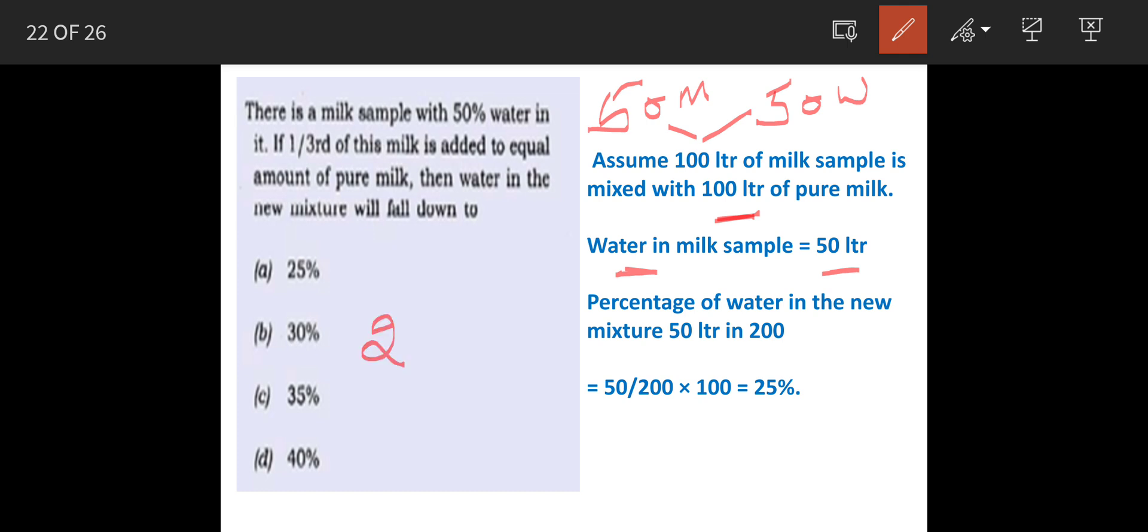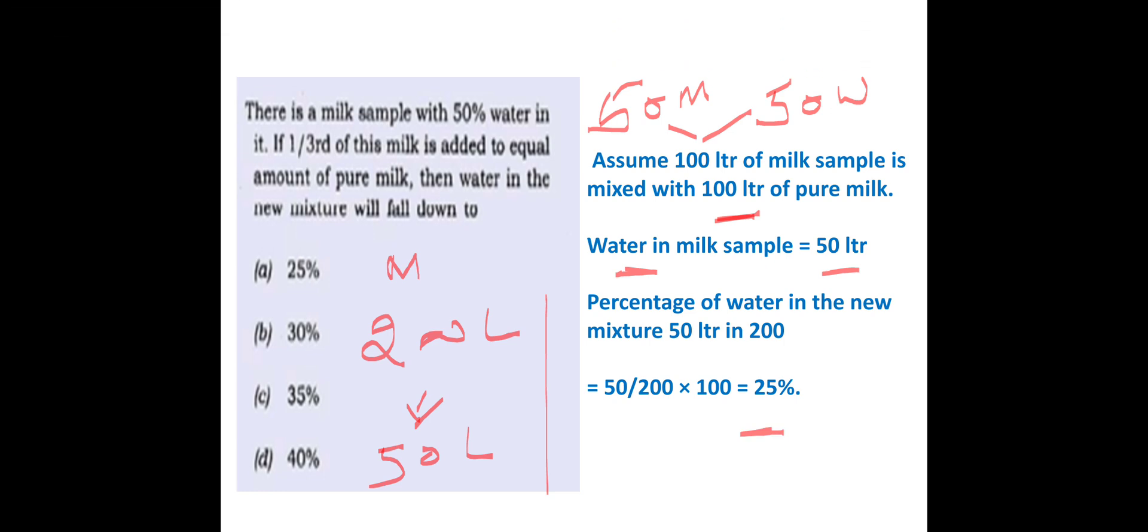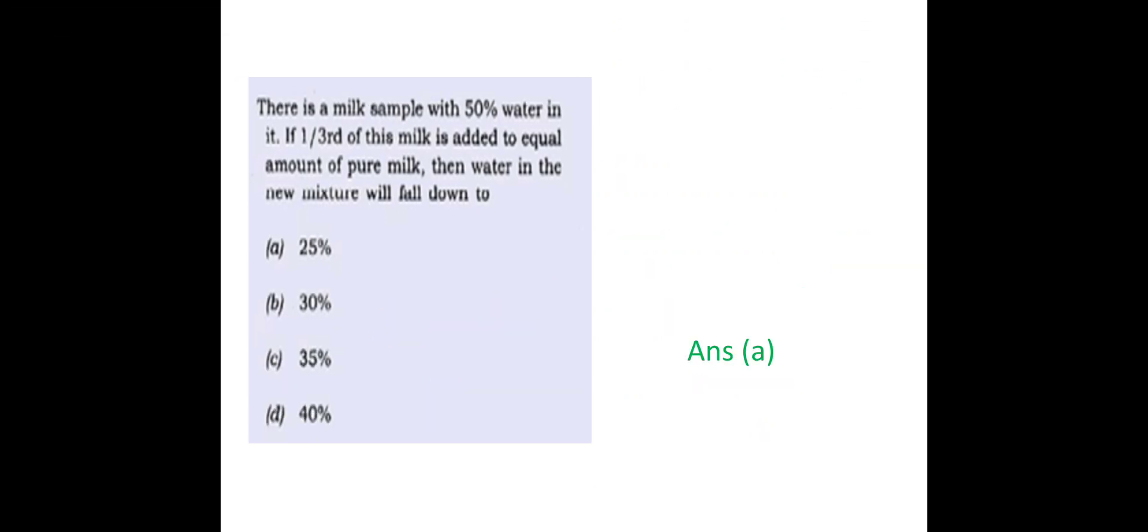Out of 200 litres of mixture, water is 50 litres. That means the percentage of water will be 50/200 × 100 = 25%, so our answer is option A.